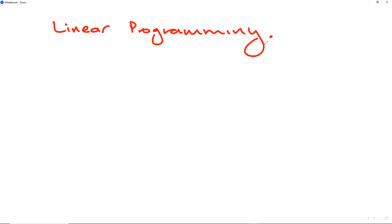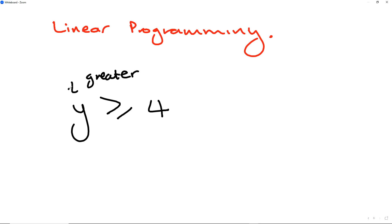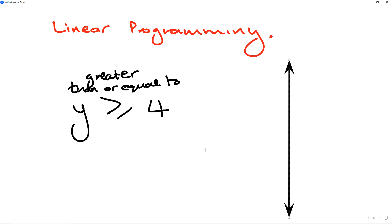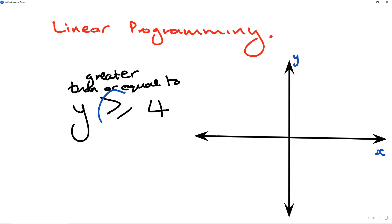Let's look at the first equation: y is greater than or equal to 4. This means greater than or equal to 4. If I draw this up, you can note that it is coming from the y-axis, so it's a y-value and it says y equals 4. Greater than or equal to 4 means that it must include 4.